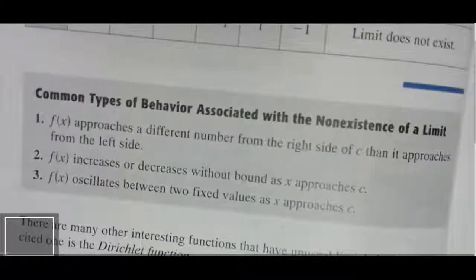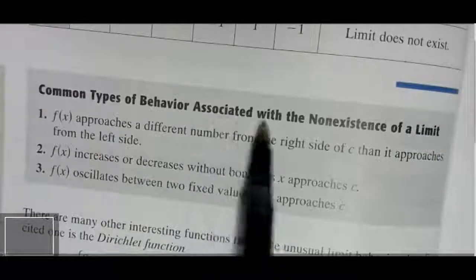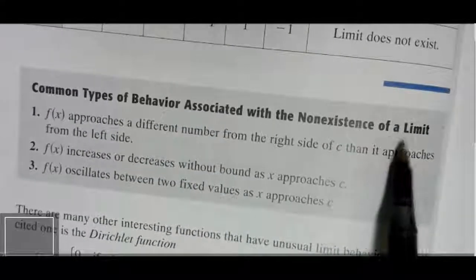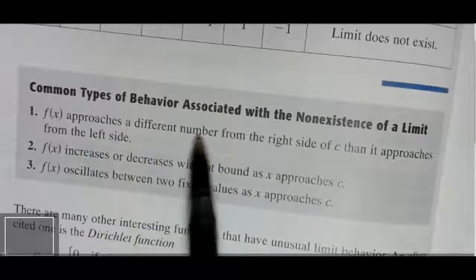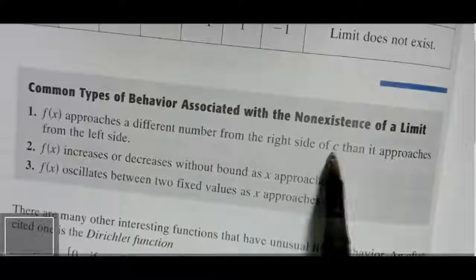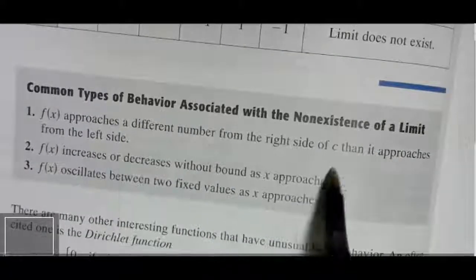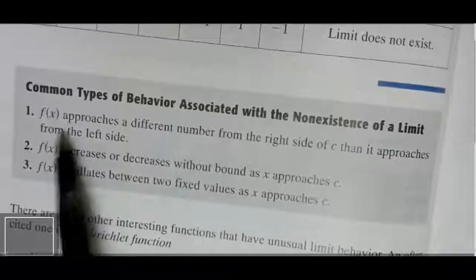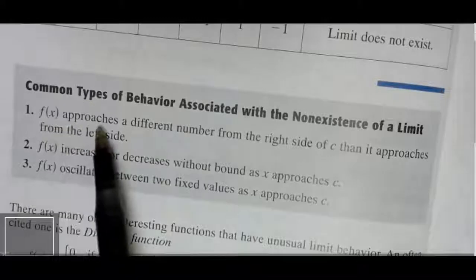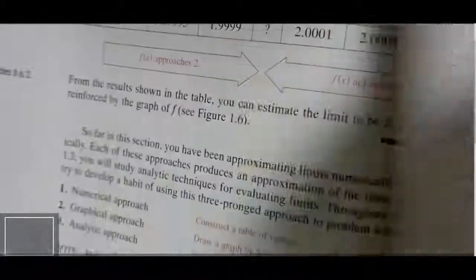We review the limit as a value that a function approaches as the x value — the input — approaches a certain x value, as we exemplified with polygons. As the number of sides of the polygon increases to infinity, the area of the polygon approaches the area of a circle. So the area of a circle is the limit of the area of the polygon.